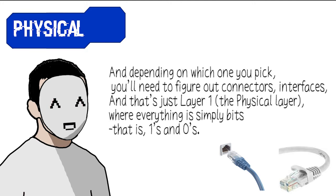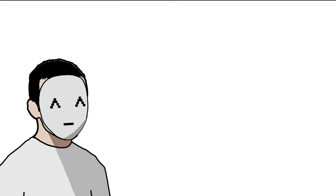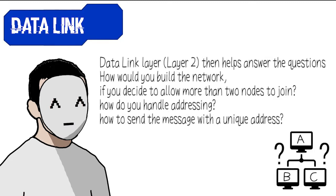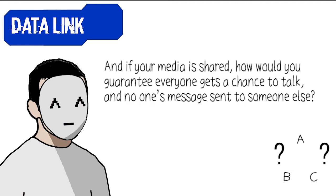That's just layer one, the physical layer, where everything is simply bits — ones and zeros. The data link layer, layer 2, helps answer the question: how would you build the network if you decide to allow more than two nodes to join? How do you handle addressing, how to send a message with a unique address, and if your media is shared, how would you guarantee that everyone gets a chance to talk and no one's message is sent to someone else?